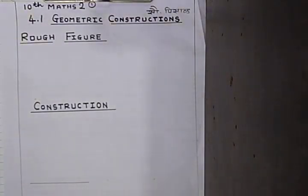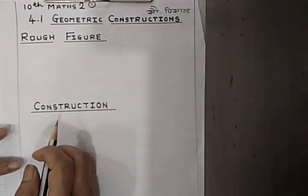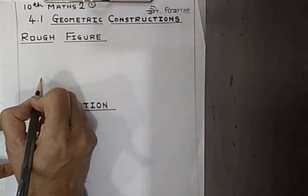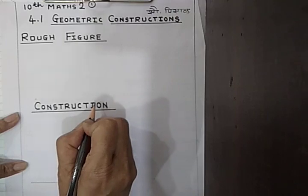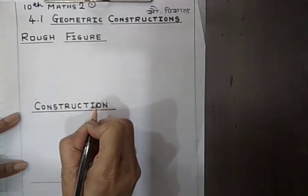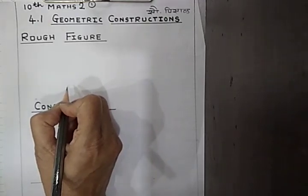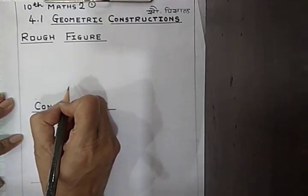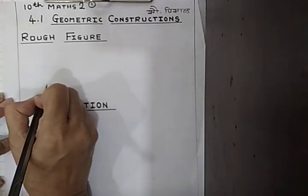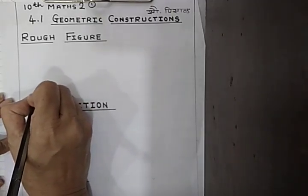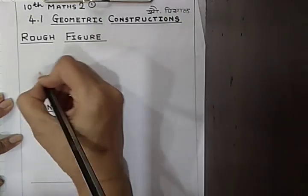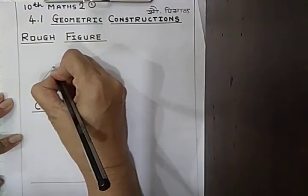Now we will turn to the main construction. First, we will draw the rough figure. For the rough figure, there is no need of a scale or ruler, so we are just drawing the rough figure of triangle ABC.